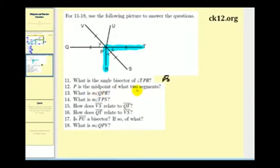Number 12, P is the midpoint of what two segments? Looking at point P, notice that segment QP has two hash marks and segment PT also has two hash marks, so those two segments are equal to each other and therefore P would be the midpoint of segment QT. Notice that P is also the midpoint of segment VS because segment VP has one hash mark and so does segment PS.